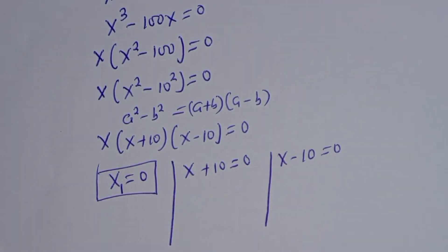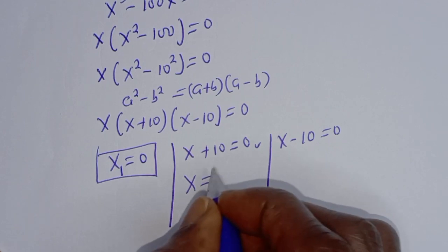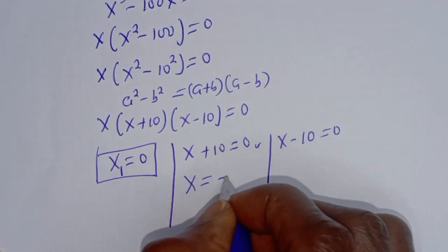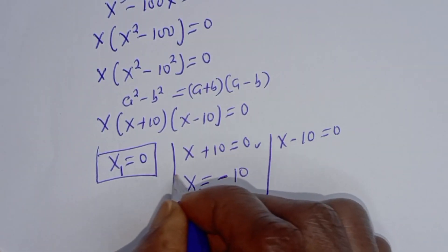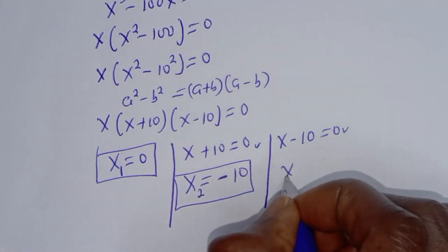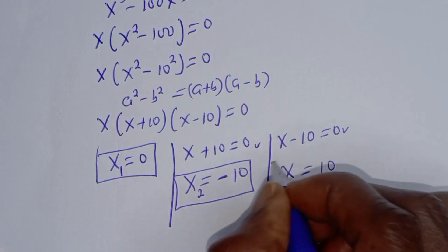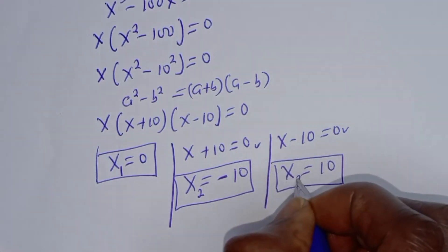From here, we have x equals, if we take 10 to this side, it becomes minus 10. Let's call this x₂. And from here, x equals 10. Let's call this x₃.